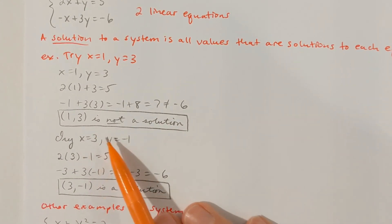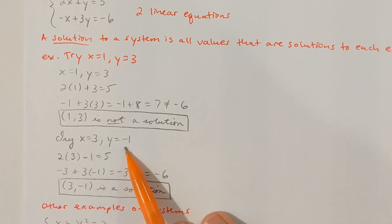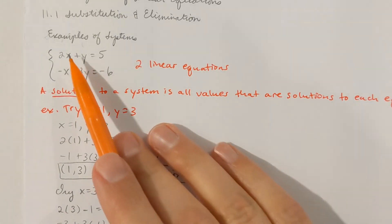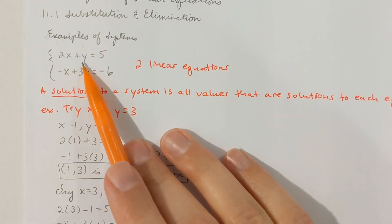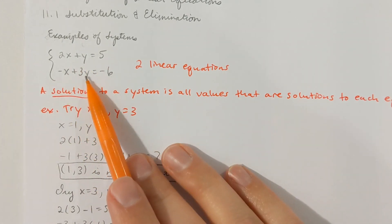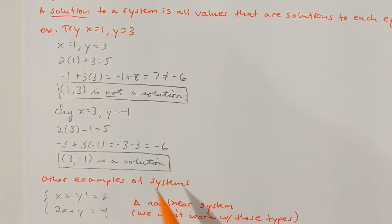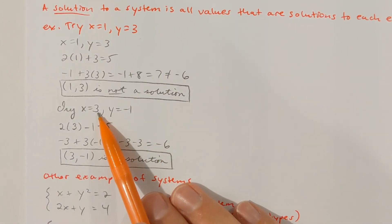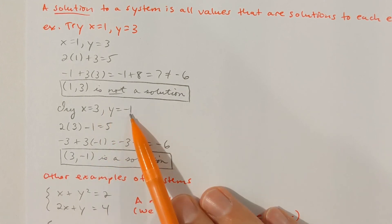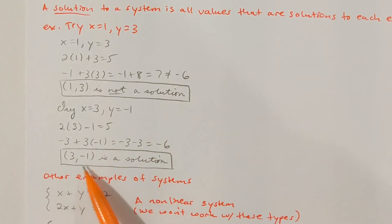If we were to guess and check, trying x equal 3 and y equal negative 1, then 6 minus 1 is 5, and negative 3 minus 3 is negative 6. Both of those look good. So x equal 3 and y equal negative 1 would be the solution. You could also write that as a point on a graph.